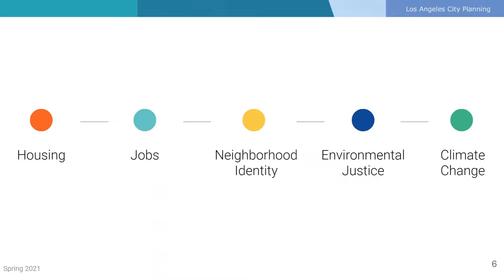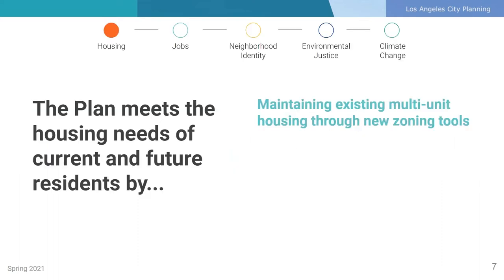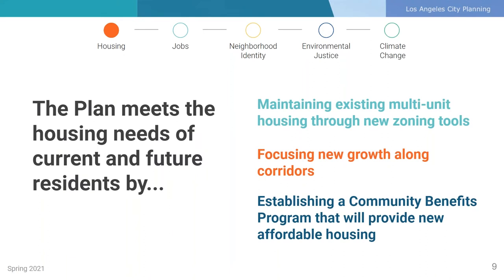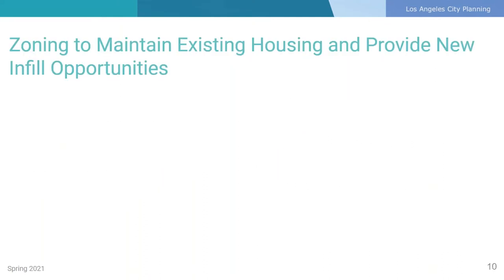In the following slides, we will examine how the proposed plan policies and zoning tools address key overarching topics and issues heard over the past several years of outreach. The plan meets the housing needs of current and future residents by maintaining existing multi-unit housing through new zoning tools, focusing new growth along corridors, and establishing a community benefits program tailored to Boyle Heights that incentivizes new affordable housing. Let's take a look at some of the unique zoning regulations proposed for the lower-scale residential neighborhoods in Boyle Heights.